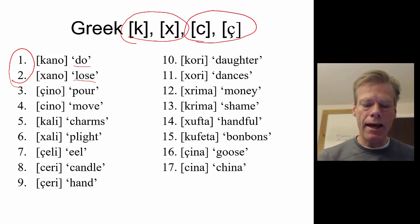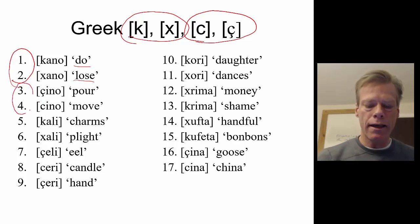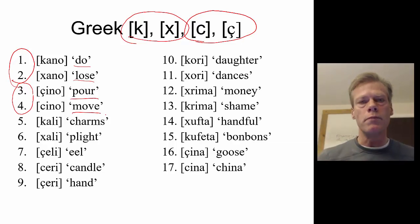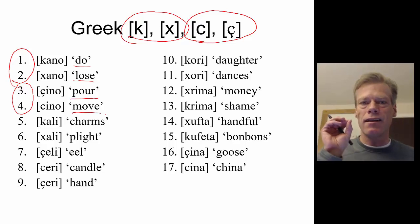Looking at the fricatives, we also find a minimal pair — they mean different things, therefore they are allophones of different phonemes. We find actually quite a few minimal pairs in this set of data, so we can be abundantly clear that the stops and the fricatives are allophones of different phonemes.